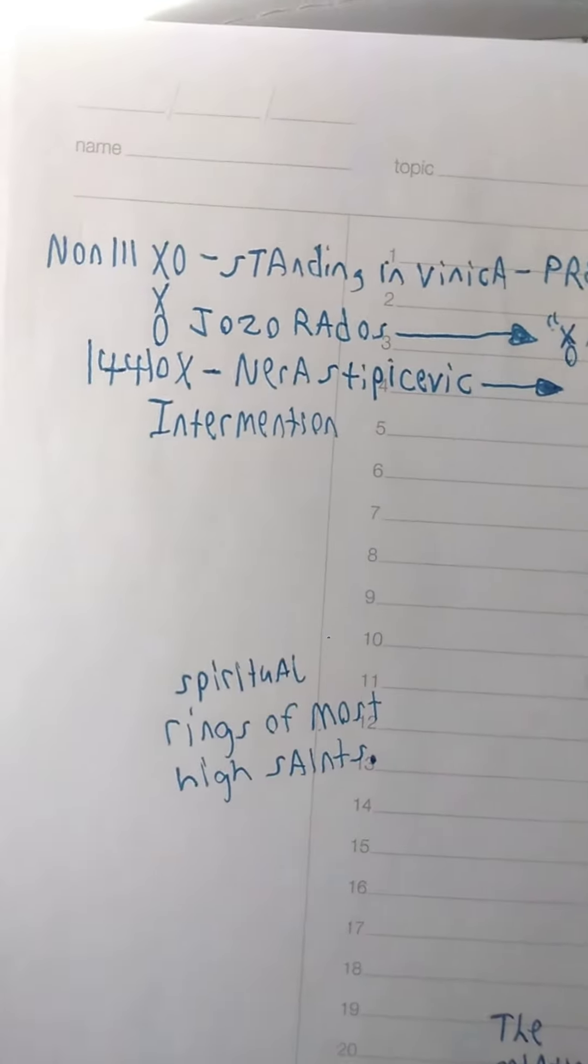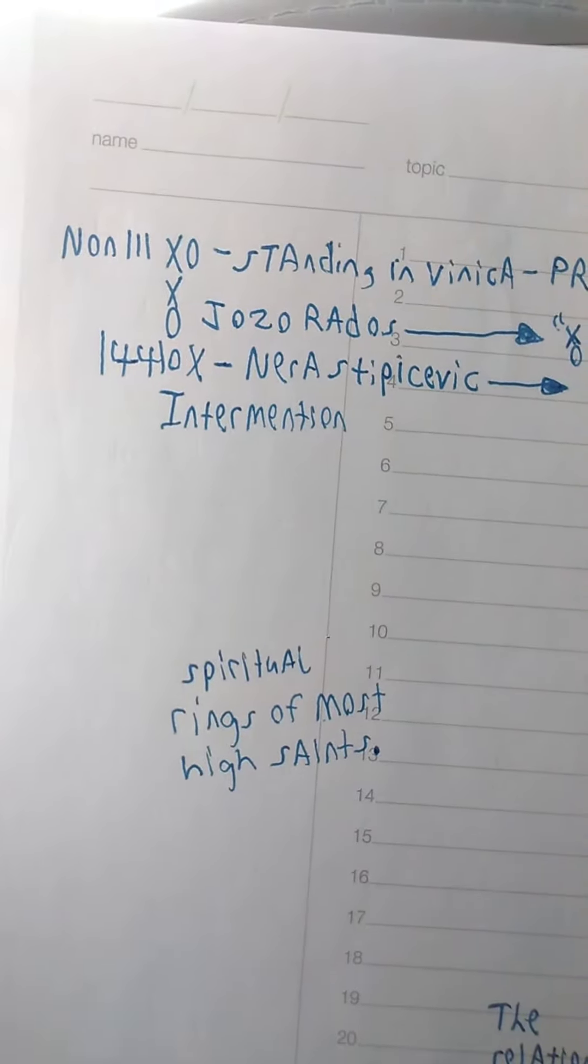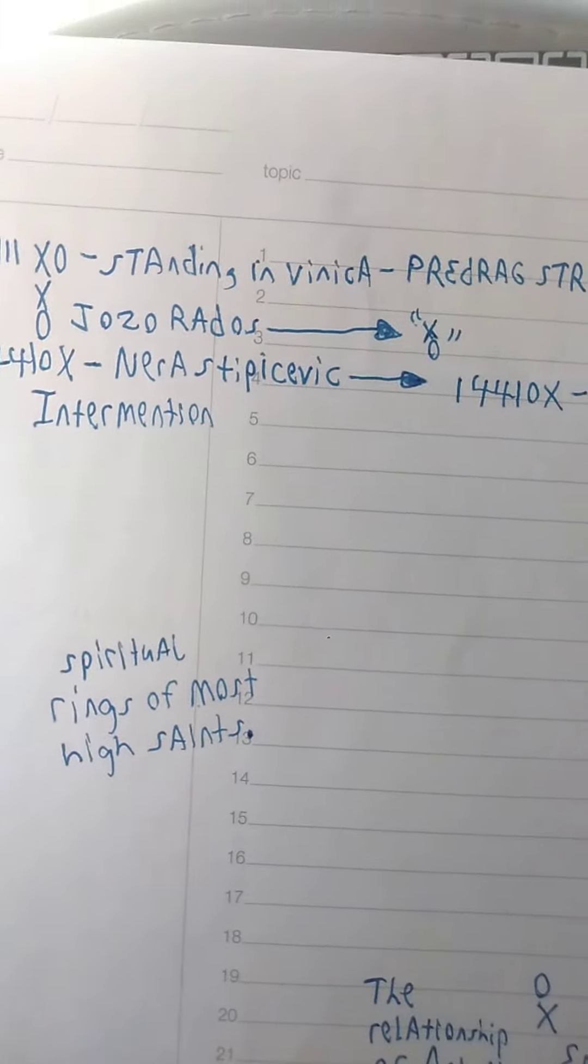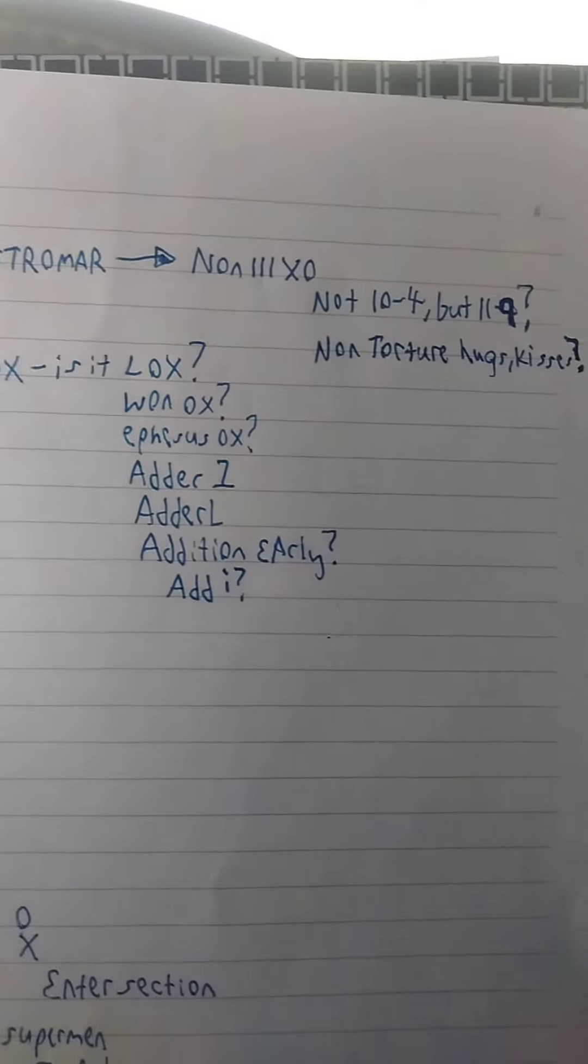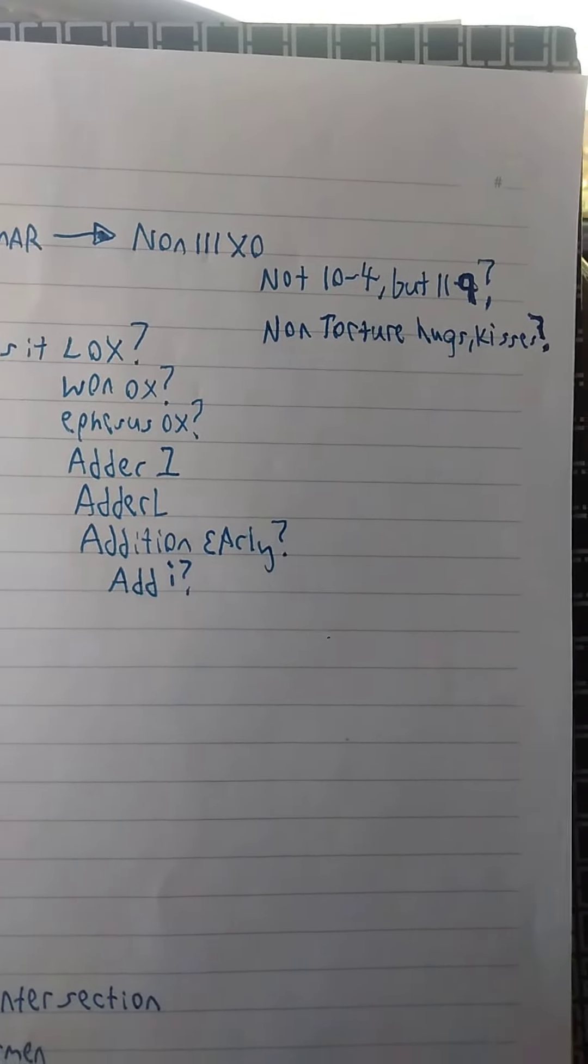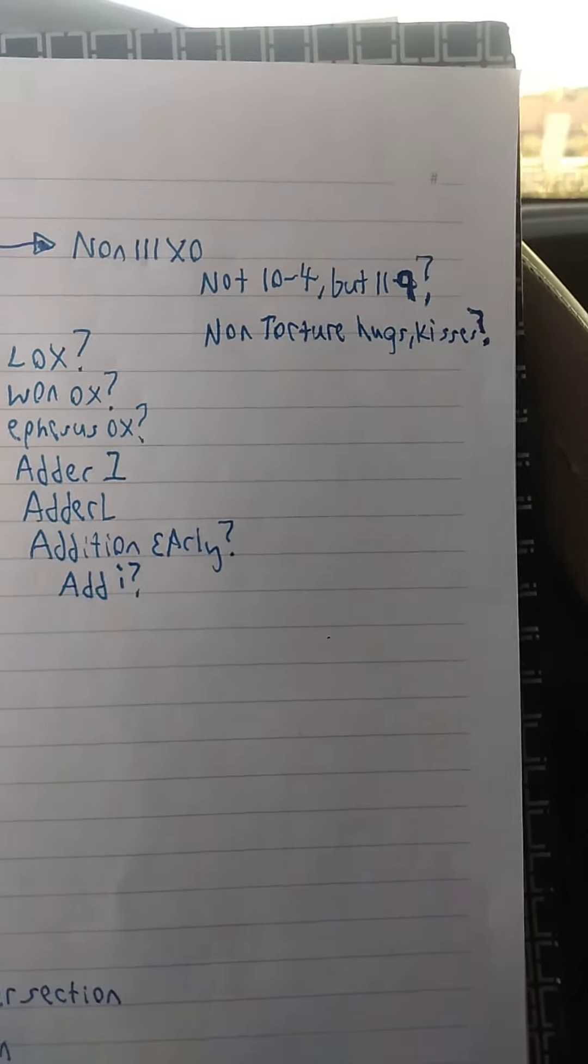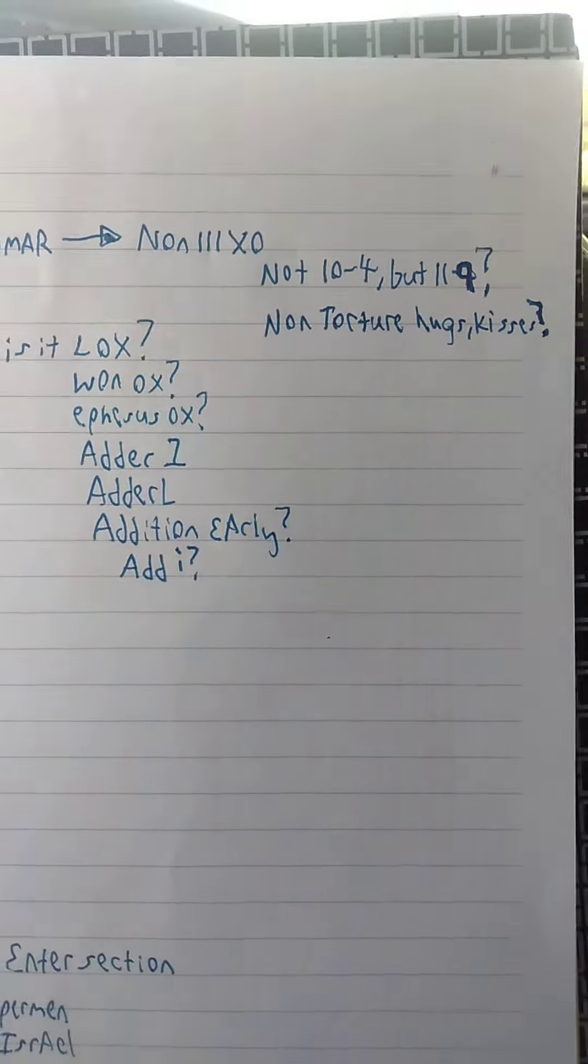Now, what you've got is the Non-111 XO. And it's Standing in Vinica Predrag Stromer. Now, Non-111 XO, these are the questions that go along with it.